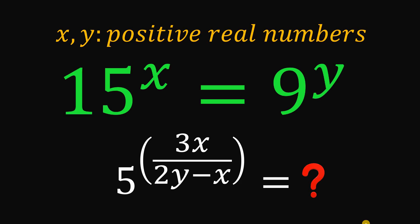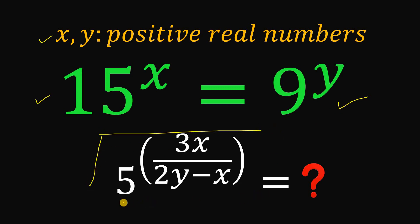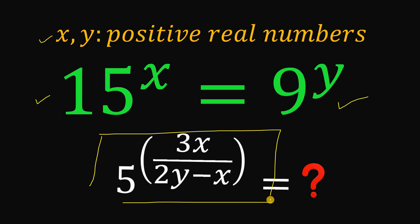Can you solve this math challenge? Here's the question: given that x and y are positive real numbers that satisfies the equation 15 raised to the power of x equals 9 raised to the power of y, our goal is to find the numerical value of 5 raised to the power of 3x over 2y minus x.